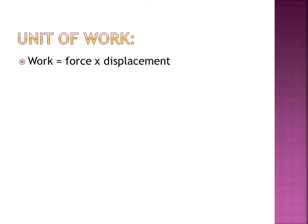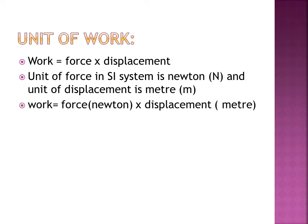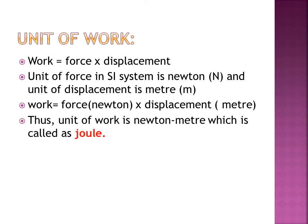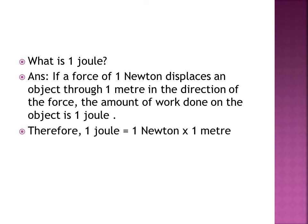Now we will discuss the unit of work. Work is the product of force and displacement. The unit of force is Newton (N) and the unit of displacement is meter (m). So the unit of work is Newton meter, which is called a Joule. One Joule is defined as: if a force of 1 Newton displaces an object by 1 meter in the direction of the force, the work done is 1 Joule. This is written as 1 J = 1 N × 1 m. Joule is denoted by capital J.